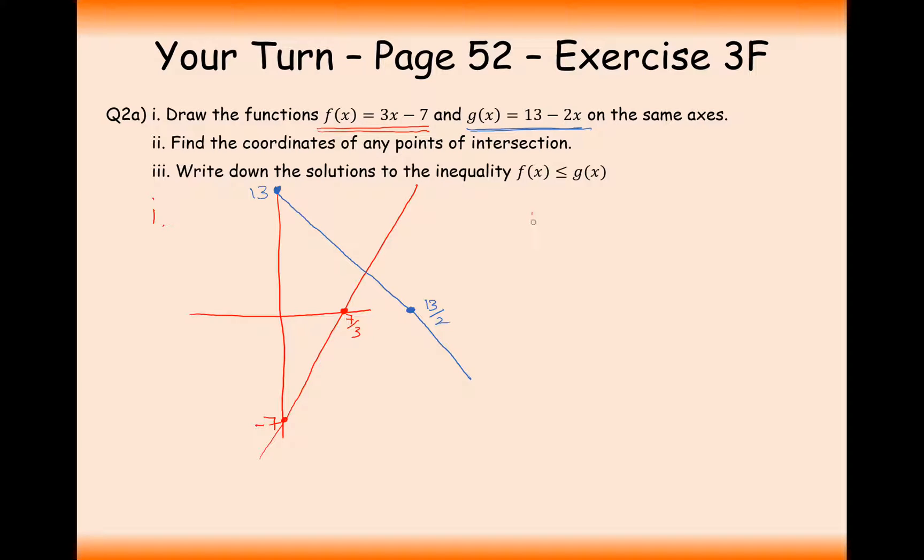What we need to do for part 2 now is to find out when the two graphs have any intersection points. When we find the intersection of two graphs, we set the equations of those graphs equal to each other. Then we solve the equation. Add 2x onto the other side and add 7 onto the other side and divide through by 5.